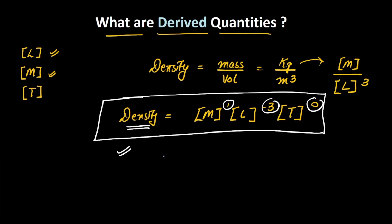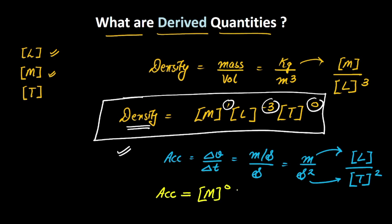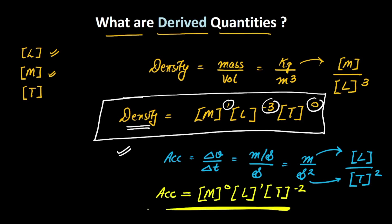Similarly, to find the dimension of acceleration: acceleration is change in velocity divided by change in time. Velocity is measured in meters per second and time in seconds, so acceleration can be written as meters per second squared, which is [L][T⁻²]. So the dimensional formula for acceleration is M⁰ L¹ T⁻². Likewise, you can find the dimensional formula for all derived physical quantities.